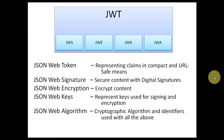JSON Web Token is a representation of claims in a compact and URL-safe means, which is used to propagate identities or claims to be transferred between two parties. JSON Web Signature is used to secure the content of the JWT with digital signatures — where we can sign the JSON Web Token from the sender side and it can be verified on the receiver side.